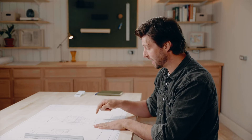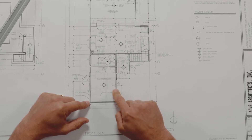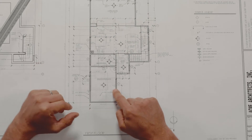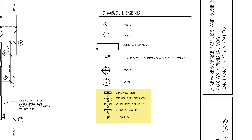In this case, we have a register for our HVAC system that is called out here on the symbol legend. We have supply registers with the arrows going out and return registers with them coming in. And if there's a ceiling register, you see that it looks a little bit different than the floor register.